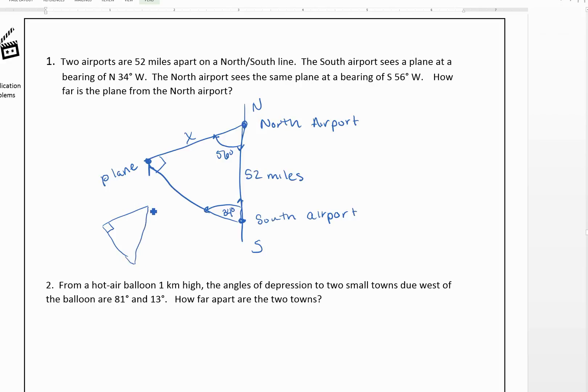So drawn a little more appropriately, this would be 56 degrees, this would be 34 degrees, and this is x, and we know that this is 52. So 52 is actually our hypotenuse.